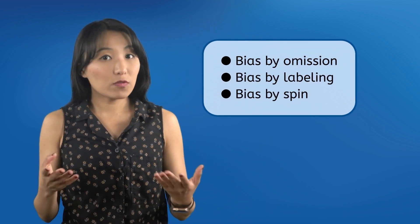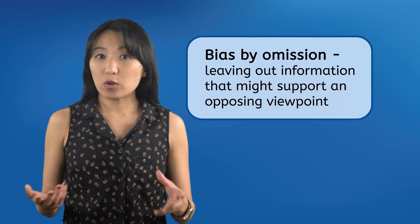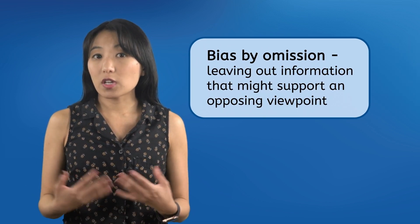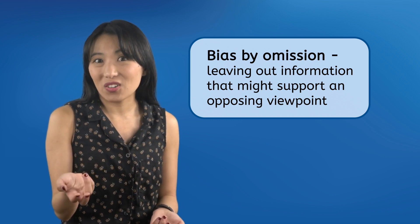Media bias can come in many forms, but we'll focus on three of the most common forms in this lesson. One common form of media bias is bias by omission, or leaving out information that might support an opposing viewpoint. You aren't necessarily being lied to — you're just not being told all the facts. If a new game comes out and you read an article that says the game has zero flaws and is the best game ever, the author has probably omitted negative information, like the game being basically unplayable because of major glitches. If you suspect bias by omission, find out the truth from other sources. That's why it's so important to get your information from multiple sources.